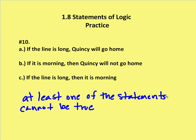At least one of these statements must be false. If the line is long, then Quincy will go home — but Quincy will not go home if it's morning. Statement C says if the line is long, then it is morning. So when it's morning, the line is long, which means Quincy must go home — but statement B says Quincy will not go home in the morning. These conditional statements contradict each other, so at least one of them cannot be true.